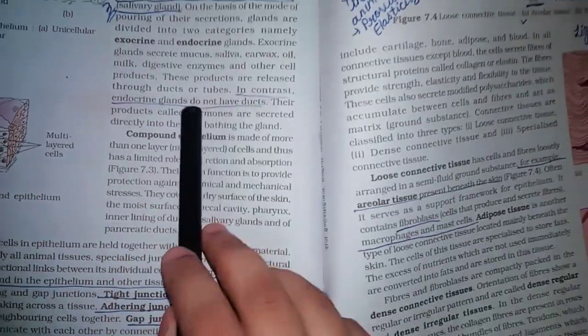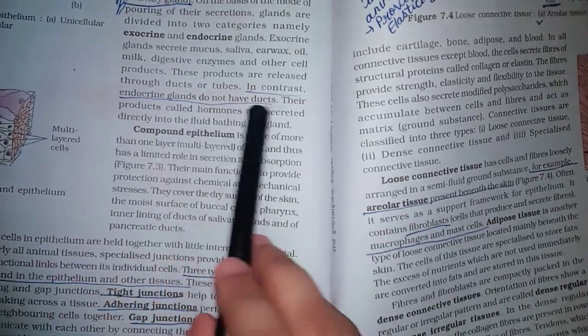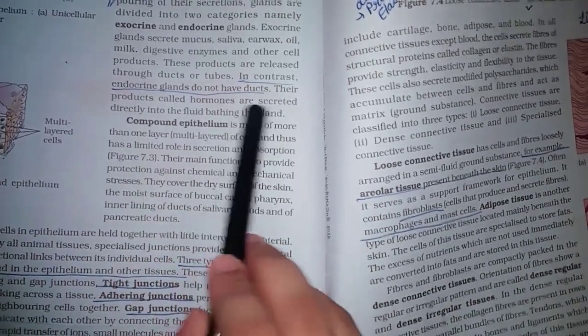In contrast, endocrine glands do not have ducts. Their products called hormones are secreted directly into the fluid bathing the gland.